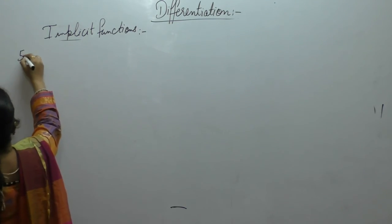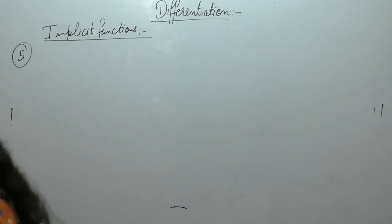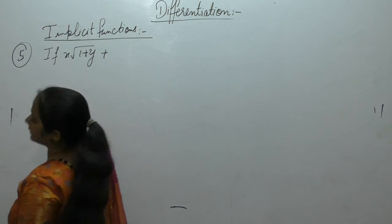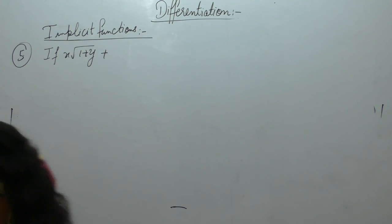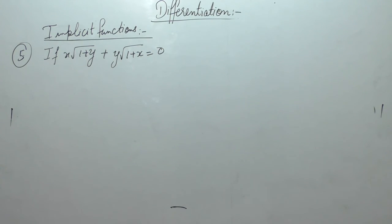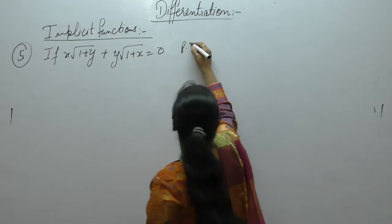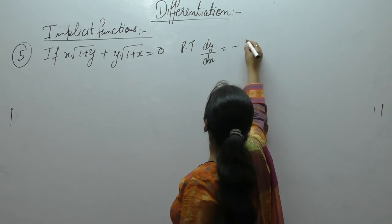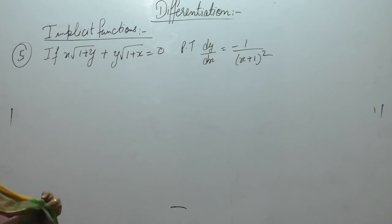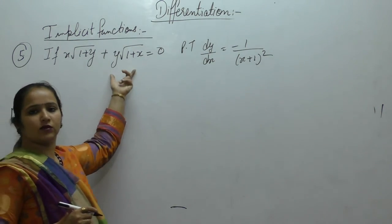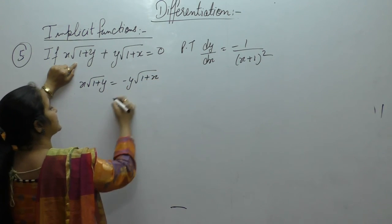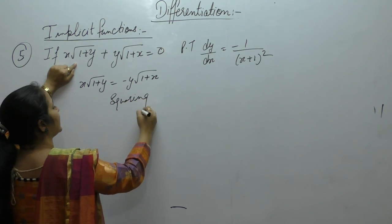Now the next one: if x·√(1+y) + y·√(1+x) = 0, prove that dy/dx = −1/(x+1)². Since the equation equals 0 we can write x·√(1+y) = −y·√(1+x). This is an important question that has appeared in exams. Remove the square roots by squaring both sides.